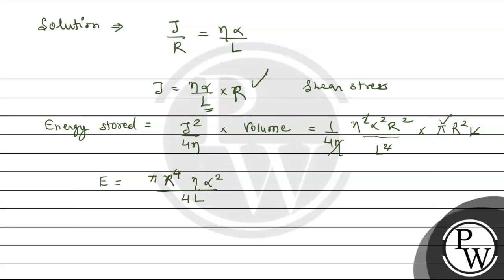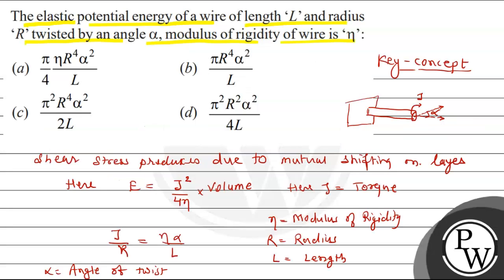We have pi, then R square here and R square here, so R to the power 4, and eta, alpha square upon 4L. Let's see which option this matches.